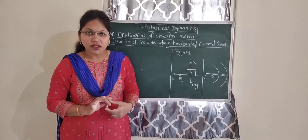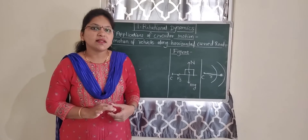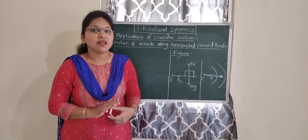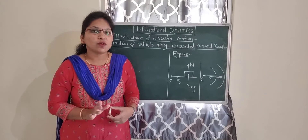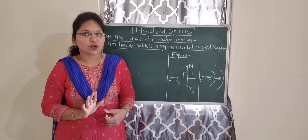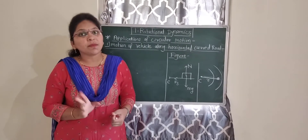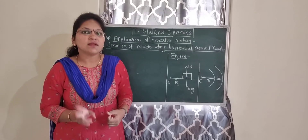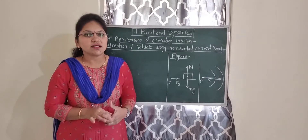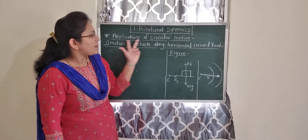In uniform circular motion, the particle's speed is constant but the direction changes — that means the velocity direction changes. In non-uniform circular motion, both speed and direction change. In UCM, only speed is constant and direction is changing.